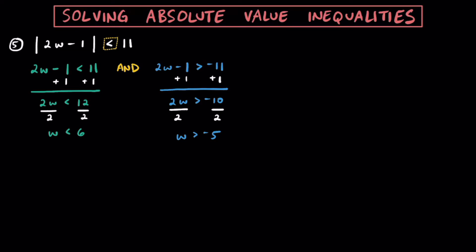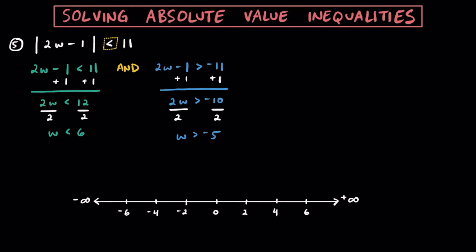There we have our two final statements. Let's graph the solutions. We know w has to be less than 6, so put an open circle on 6. We know w has to be greater than negative 5, so put an open circle on negative 5. Since w has to be greater than negative 5 but less than positive 6, it has to be sandwiched between these two values.